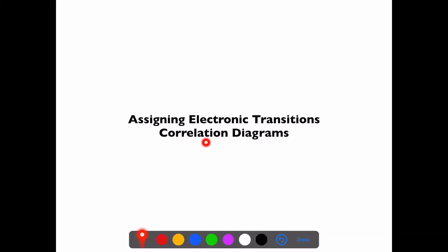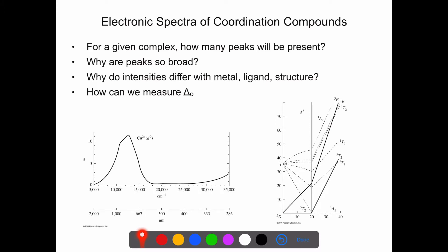This lecture is going to help us learn how to use our term symbols in order to assign electronic transitions and use what we refer to as correlation diagrams. A couple questions we hope to answer: can we predict how many peaks we expect to see in the UV-visible spectrum? Why are the peaks so broad? Why do different peaks differ in intensity with metal, ligand, and structure? How do we calculate delta octahedral for our complex? A lot of these answers are going to come from a correlation diagram that we need to learn how to use.